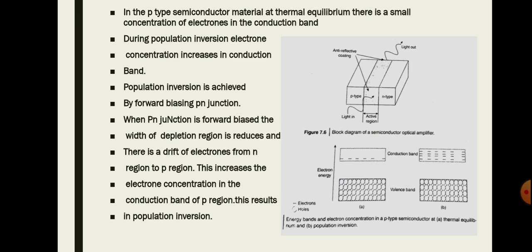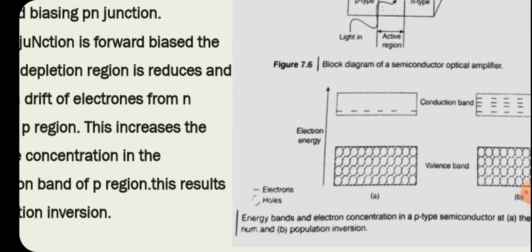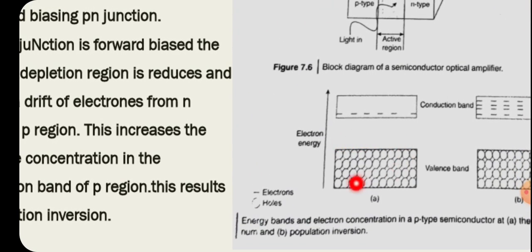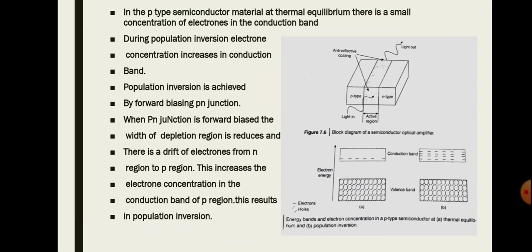In P-type material at thermal equilibrium, there is a valence band and a conduction band. P-type material has a limited number of electrons in the conduction band but many holes. Stimulated emission takes place for the optical amplification process. At thermal equilibrium, the P-type semiconductor has a smaller concentration of electrons in the conduction band.